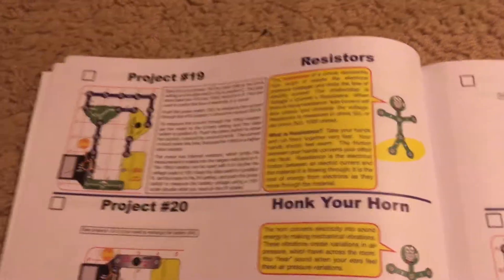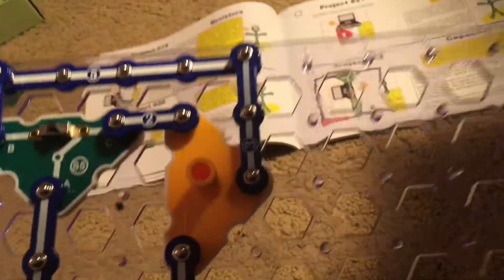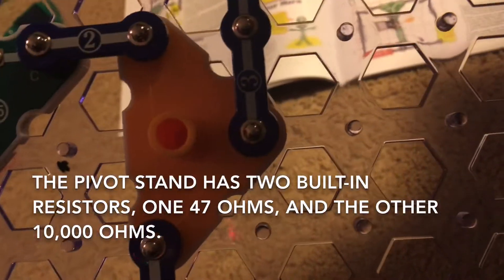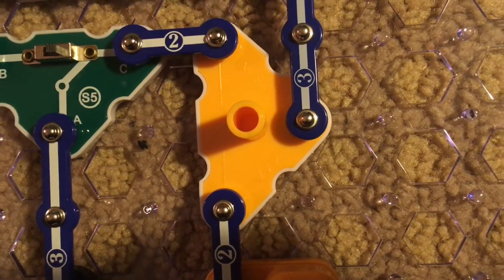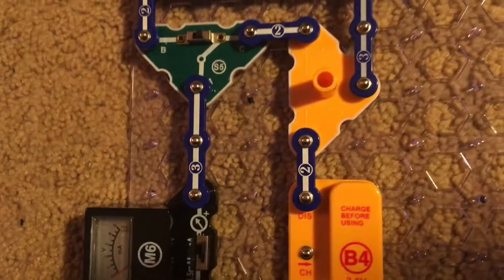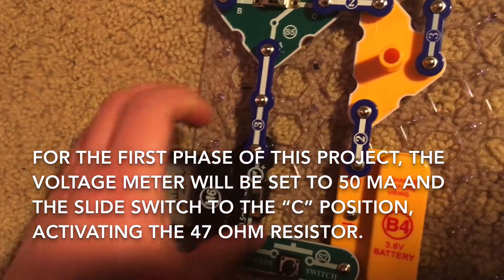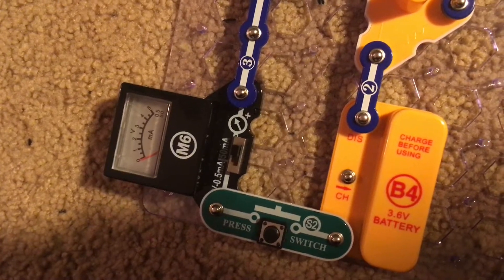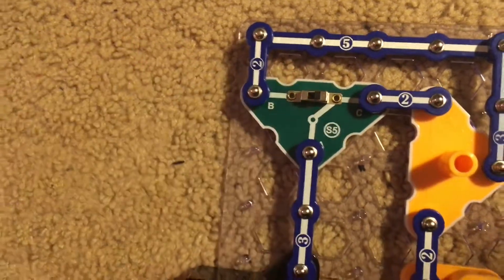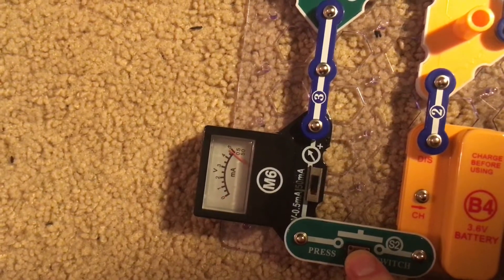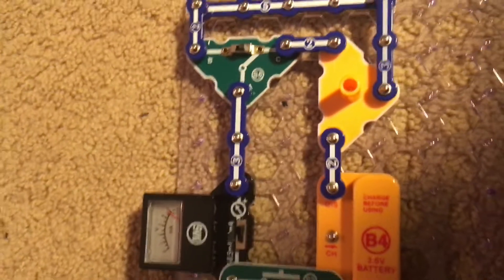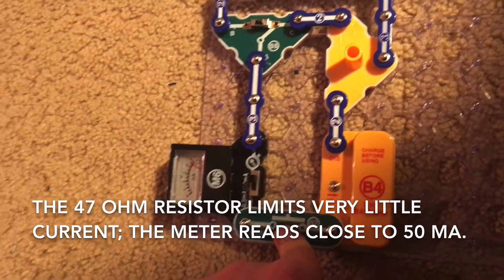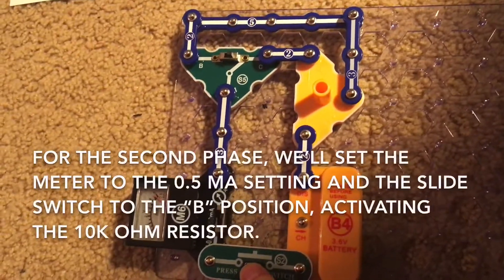Project 19, resistors. We will use this circuit, which contains the pivot stand. Now the pivot stand has two resistors built into it. One of them is 47 ohms, and the other is 10,000 ohms. There's a big difference in the value of the two resistors. For the first phase of this project, we will set the voltage meter to 50 milliamps and the slide switch to the C position. I'm going to push the press switch, and the voltage meter reads close to 50 milliamps. So the 47 ohm resistor limits extremely little current through the circuit.